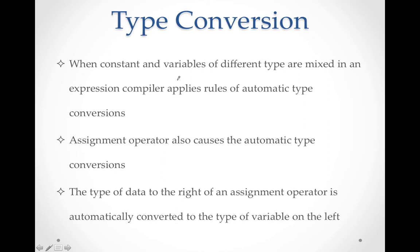When you have a number of variables in your program of different data types — like int, float, double, etc. — if we want to convert int to float, the compiler by default applies the rule and automatically converts. We are not supposed to write any specific statement; these are by-default things that happen.